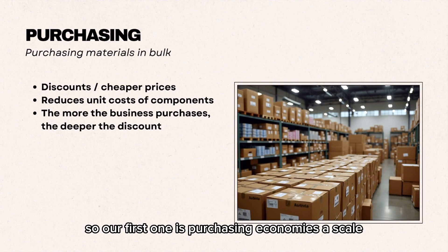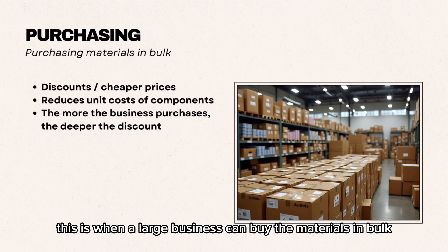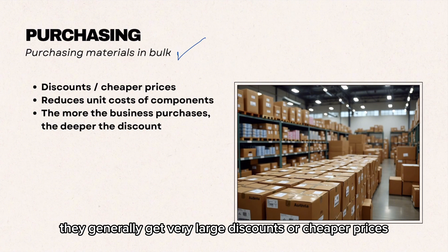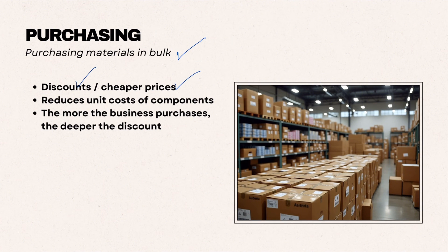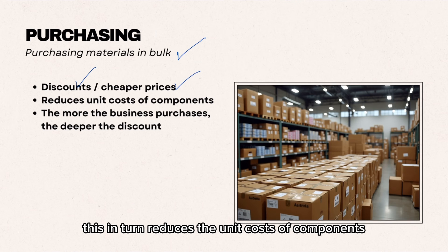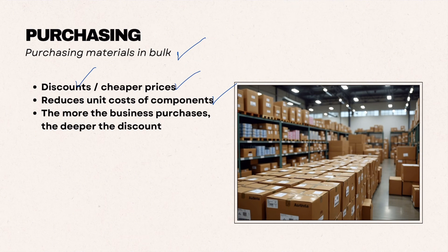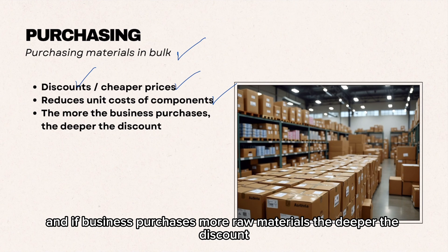Our first is purchasing economies of scale. This is when a large business can buy their materials in bulk, and they generally get very large discounts or cheaper prices. This reduces the unit costs of components, meaning costs will be lower. And the more raw materials the business purchases, the deeper the discount.